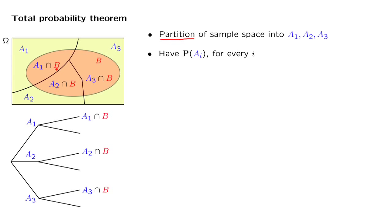In terms of a tree diagram, the picture becomes as follows. If scenario A1 materializes, event B may occur, or event B might not occur.